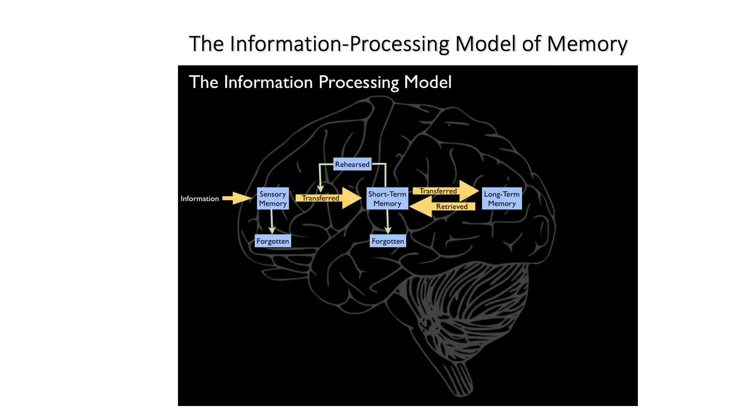The crucial feature of the information processing model is that there are different structures in the brain, such as short-term memory and long-term memory, that require that information be passed back and forth between them in order for memory to work.